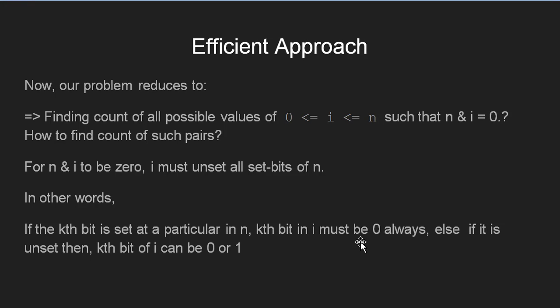Now how can we go for finding the count of such pairs? Look, for n and i to be 0, the set bits in n must be 0 in i, while others which are unset can be anything. That is, we have two options 0 or 1 for the unset bits while only one option, that is 0, for the set bits.